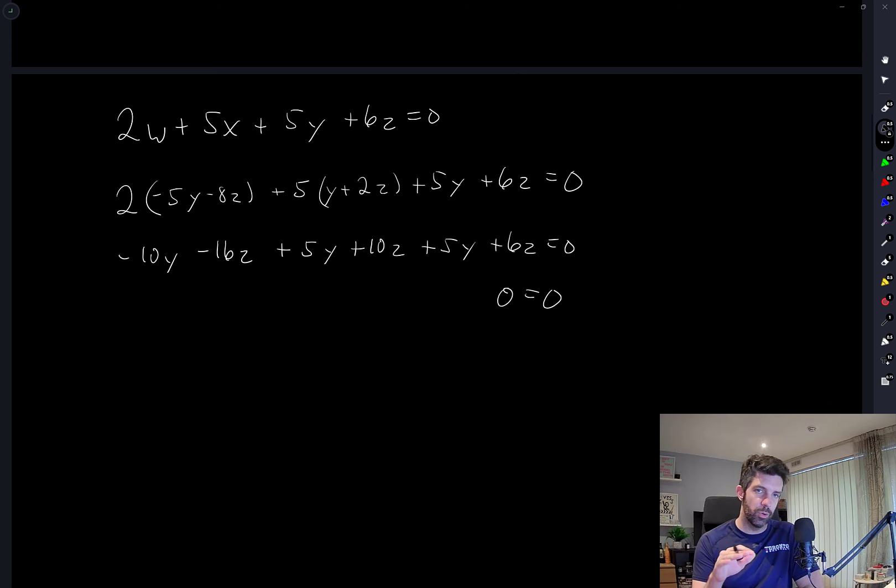This is how we know immediately that statement E is false, because it says that every solution is a scalar multiple of one particular vector. But that won't be true because we'll be able to have, the solution space will be two-dimensional.